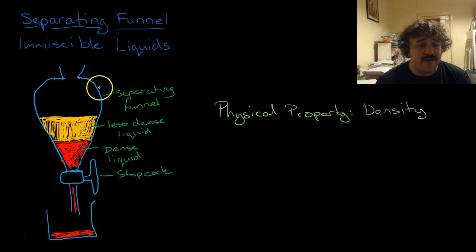This here is your separating funnel. You have a less dense liquid and a more dense liquid. The more dense liquid will sink to the bottom. You pour them in, let it sit there, and the more dense one will sink to the bottom. The physical property we're using is density.